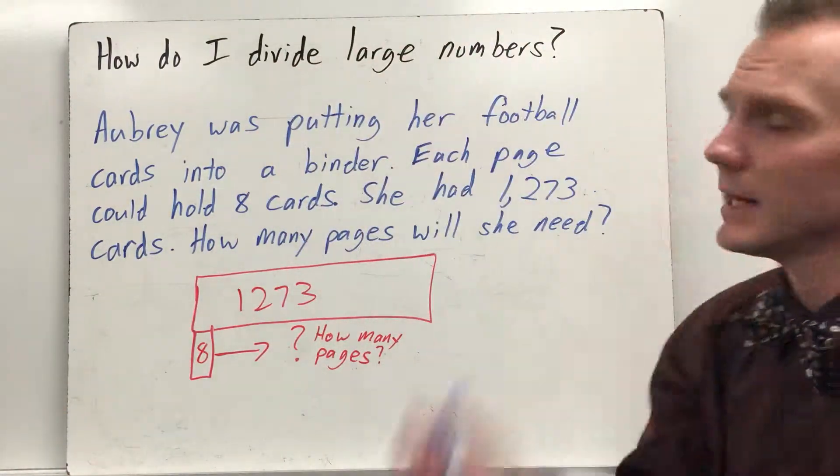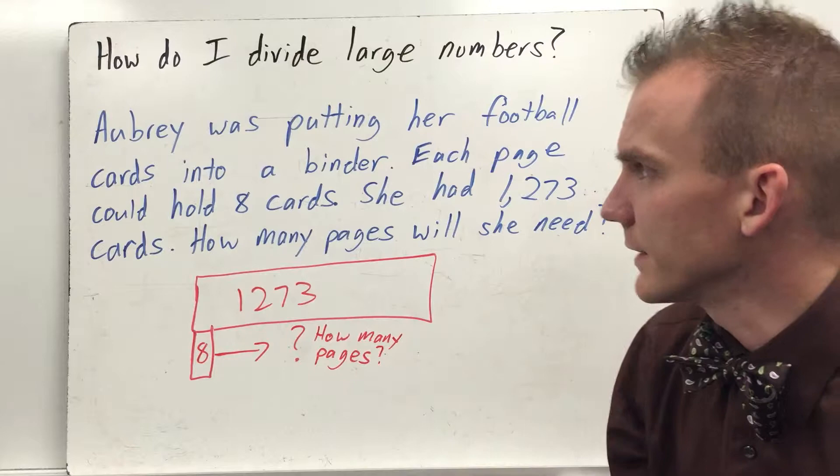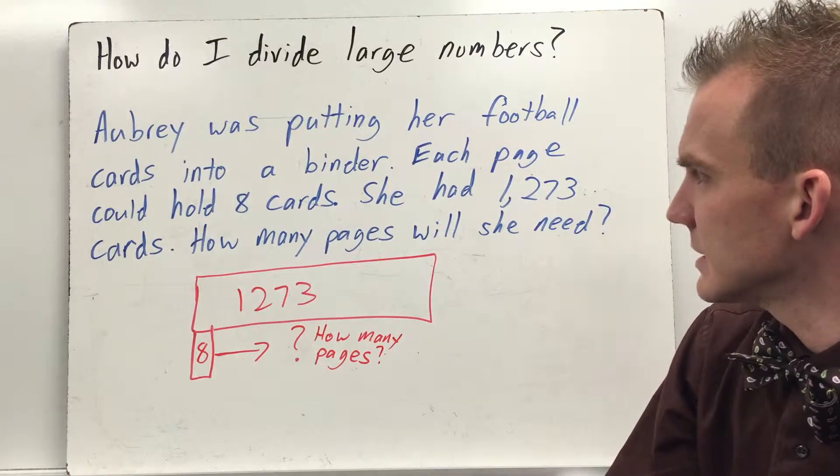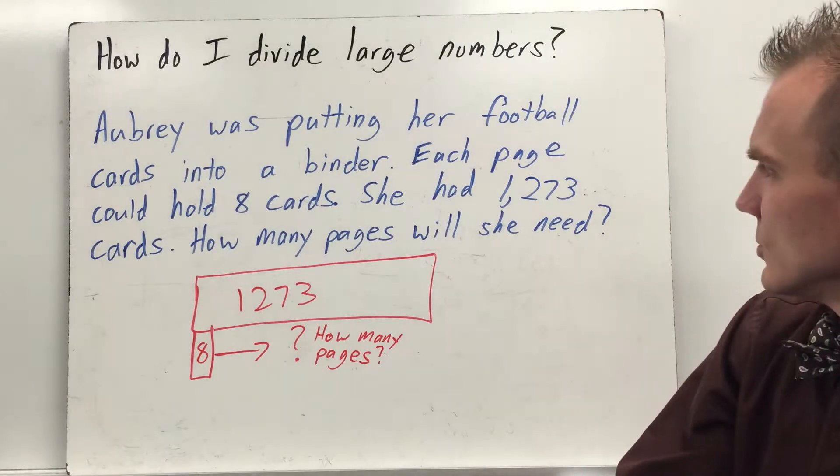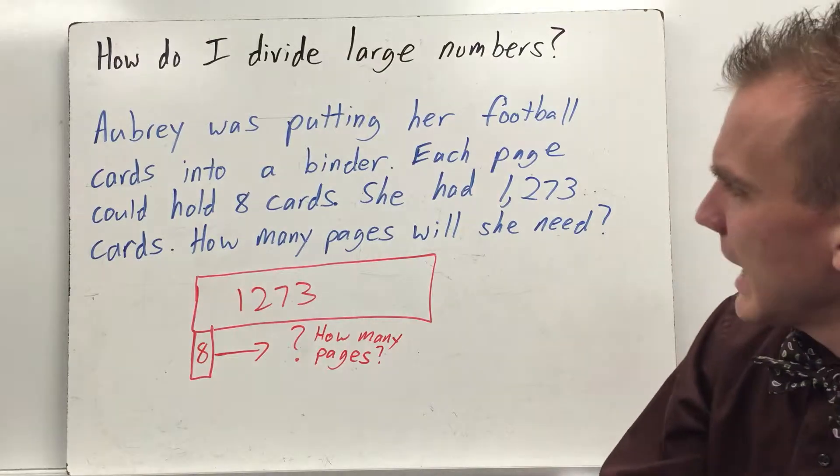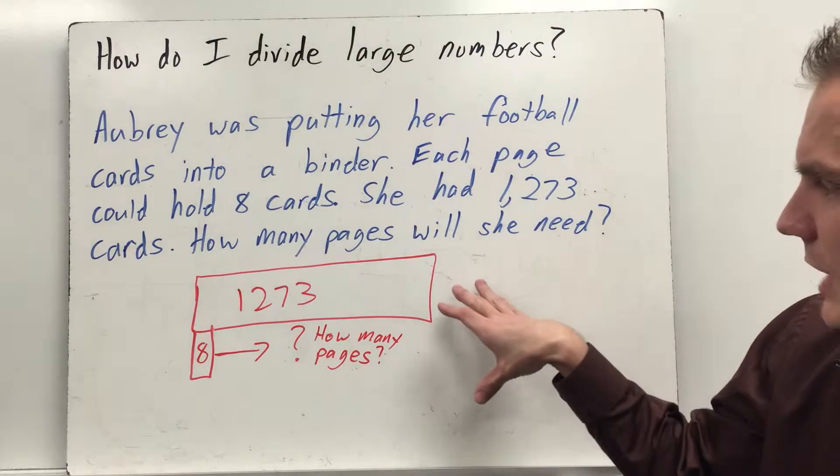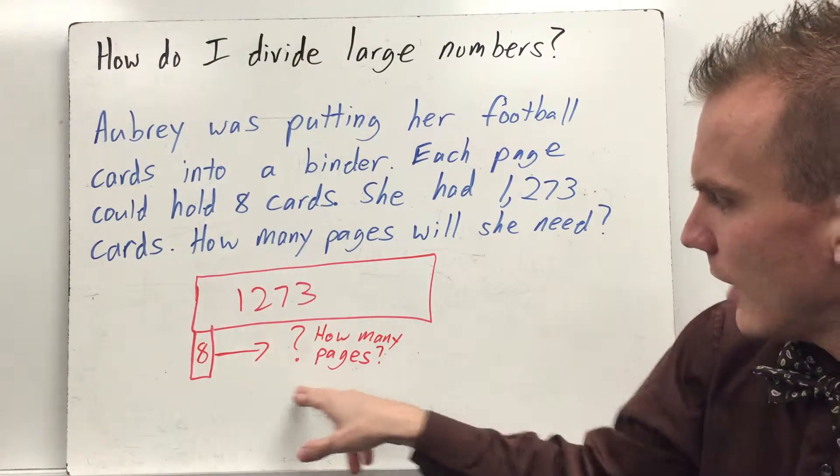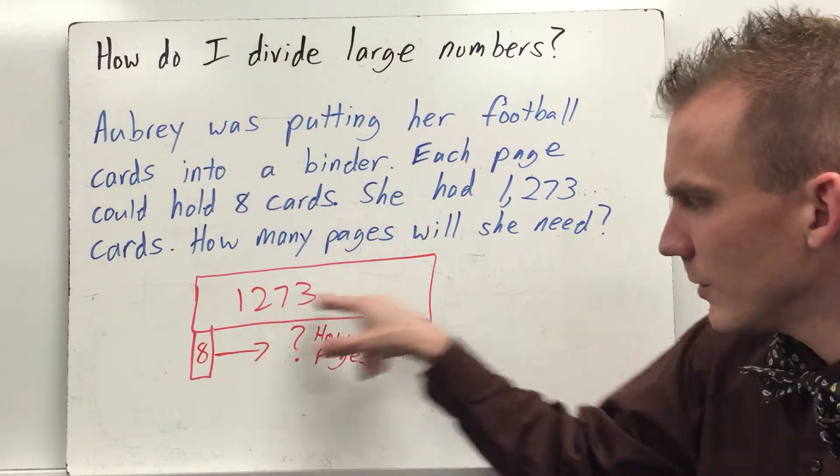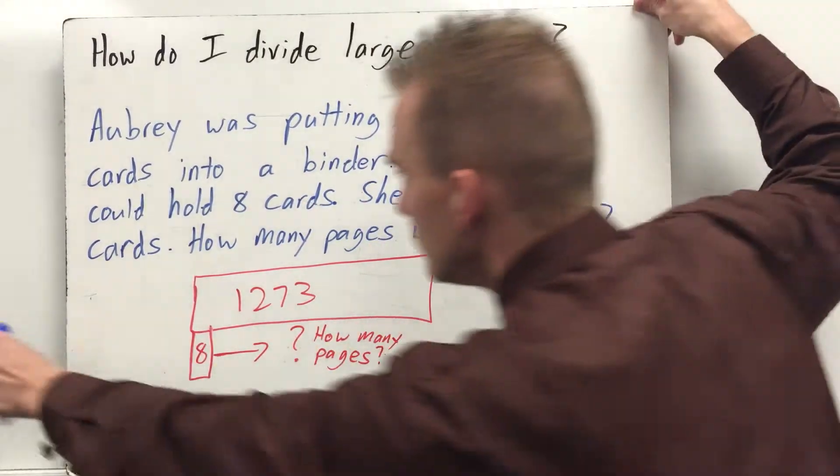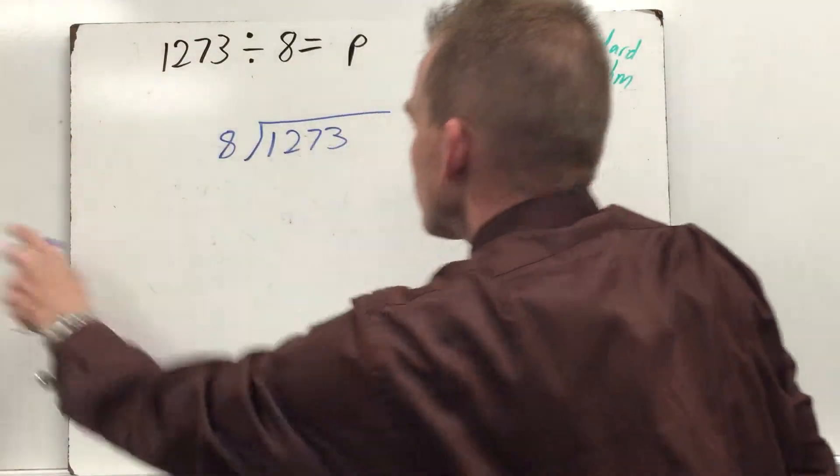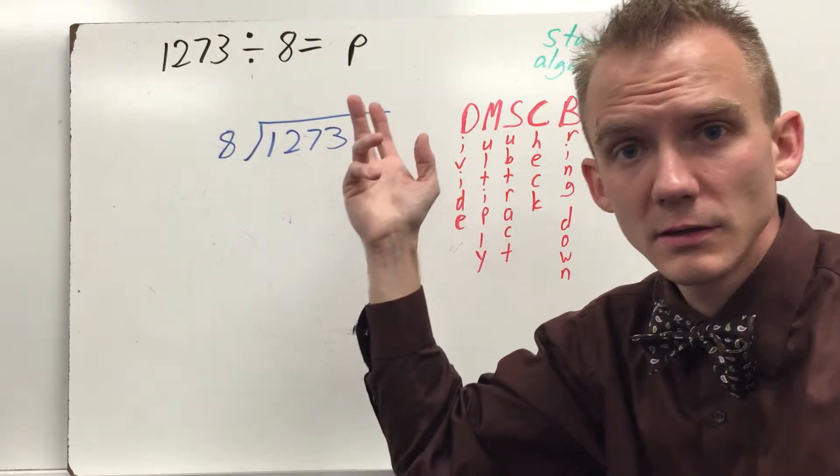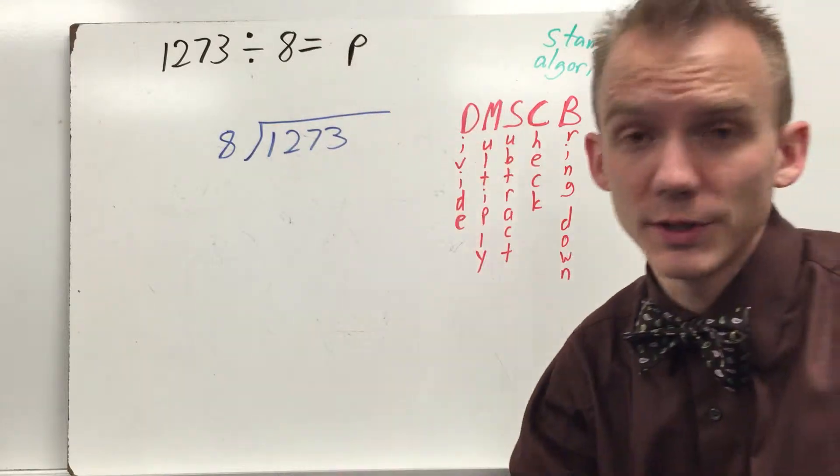Well, that's great, Mr. Donnelly, but how do I divide large numbers? Let's take a look at this problem here. Aubrey was putting her football cards into a binder. Each page could hold 8 cards. She had 1,273 cards. Wow, that's a lot. How many pages will she need? So this is the diagram I draw. I have my total 1,273. I know that it's 8 cards per page, but how many pages? So this is what I'm going to figure out. How many groups am I going to have? You would think about this as 1,273 divided by 8. And that's going to equal P or the number of pages.